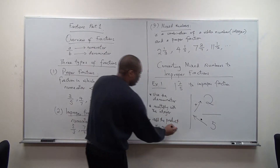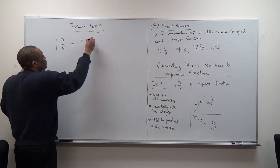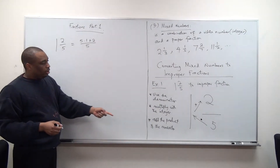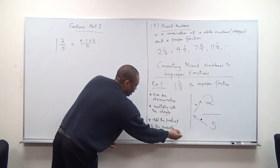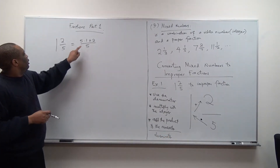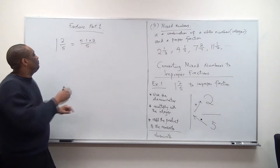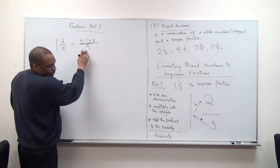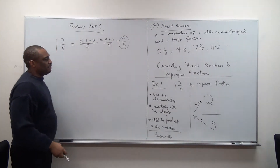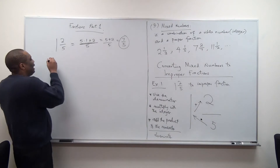When you add the product to the numerator, you still put the fraction bar over the denominator. So five times one is five, plus two gives us seven, all over five. The result is seven over five. That is the improper fraction.